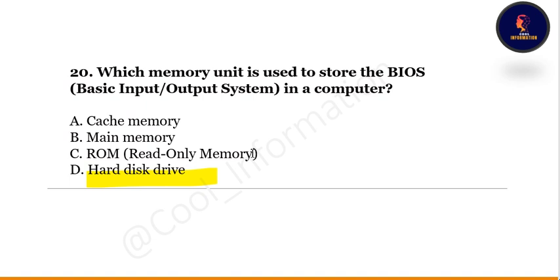The last question, number 20: which memory unit is used to store the BIOS in a computer system? Options are cache memory, main memory, ROM, or hard disk drive. The correct option is C — ROM.